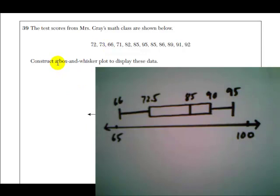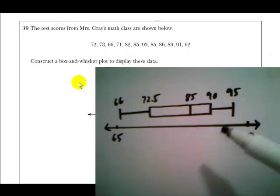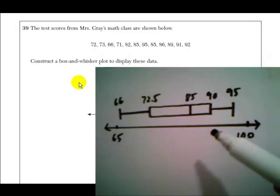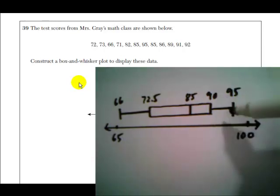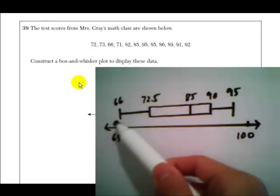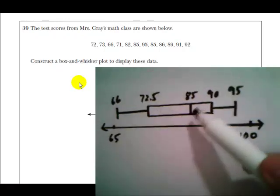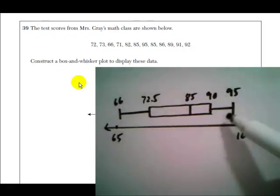All right. So the box and whisker plot will look something like this. You guys, if you're working out of the test, have a scale that they gave you. I just drew a simple sketch here. Try to be a little more precise when you're doing this on the exam. But basically, the five numbers that we found in the first part, the minimum, the maximum, the two quartiles, and the median, those are the important points on the box and whisker plot. So at each one of those, we want to make a straight vertical line. A line at 66, a line at 72.5, a line at 85, a line at 90, a line at 95.